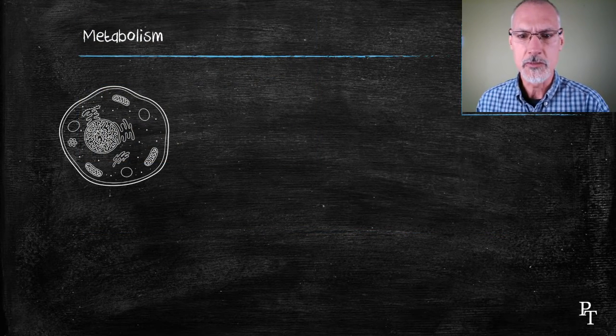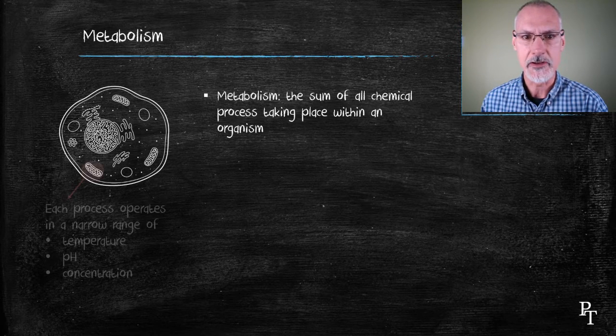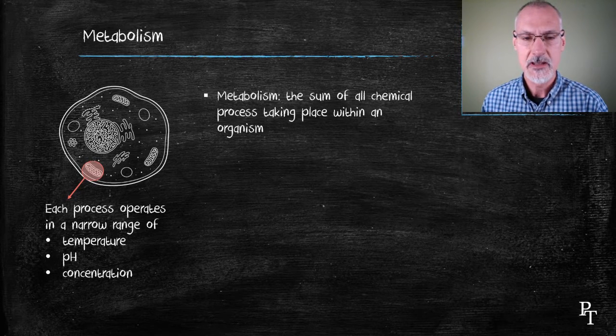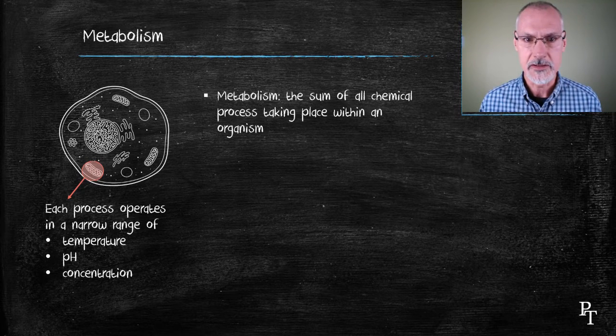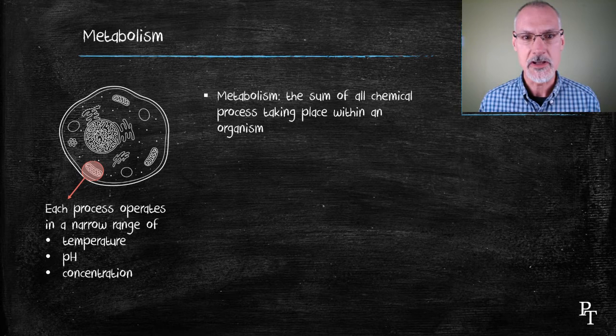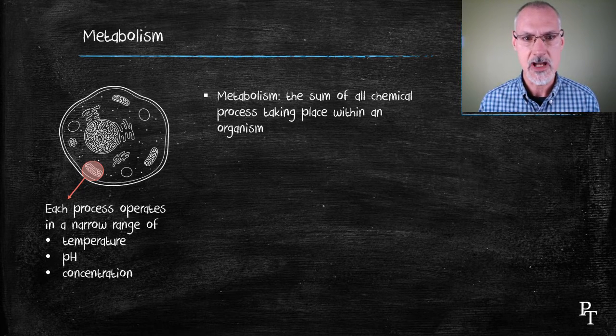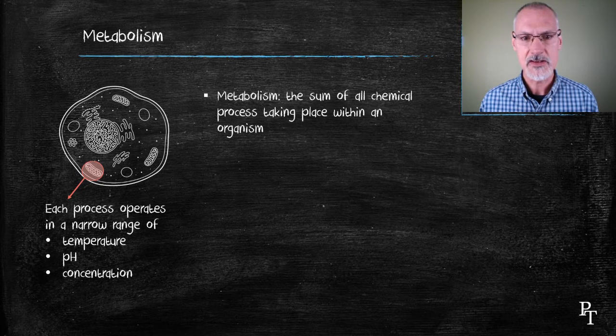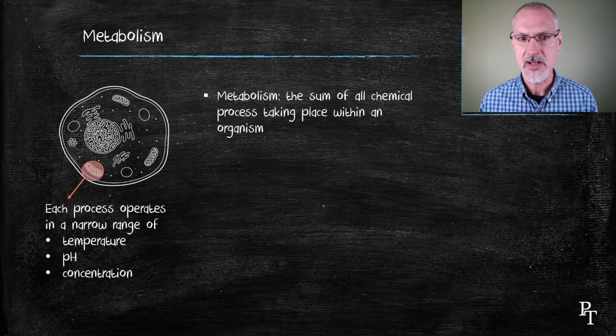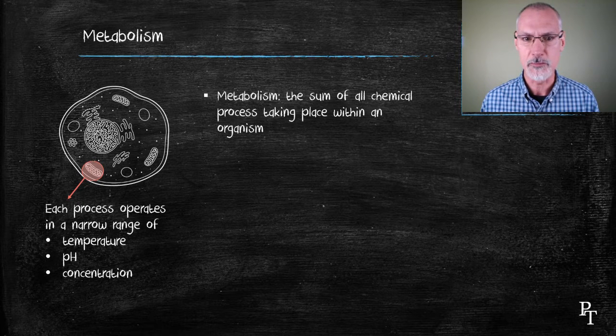Let's begin with first of all what's meant by the word metabolism. It represents the sum of all the chemical processes that are going on inside of a cell. Here I circled the mitochondria of a cell. That particular organelle is responsible for respiration, and that respiration takes place by a series of reactions, not just one. Each reaction occurs in its own narrow range of temperature, pH, and concentration, all that have to be carefully controlled by the cell.